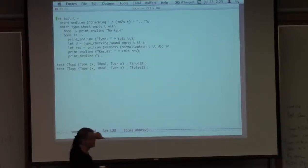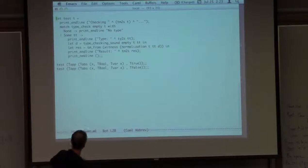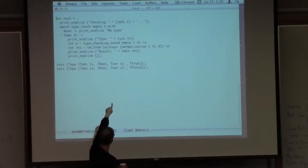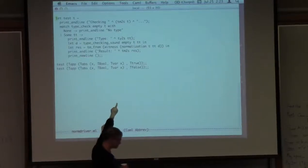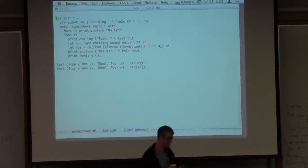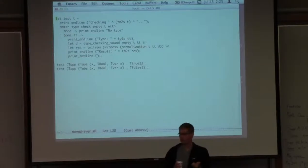We first call type check and test whether what comes back is some or none. If it's none, then it didn't type check. If it's some, then we call type checking sound with the same context, the same term, and the type that returned.